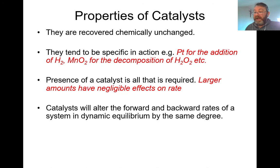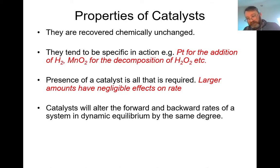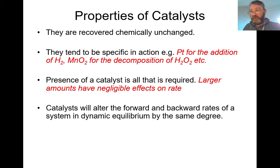Catalysts will alter the forward and backward rates of a reaction in dynamic equilibrium by the same degree. In a reversible reaction, A + B gives C + D, and as C + D build up they react to reform A + B - a cyclic process in a closed system. If a catalyst speeds up A + B making C + D, it will equally speed up C + D making A + B. Likewise, if a catalyst slows one direction, it slows the other by the same degree.